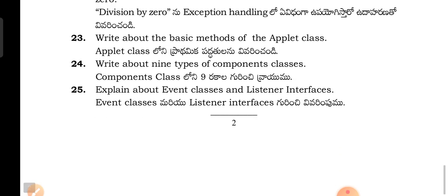So that is the model question paper for computer science second year students, paper 1, Java programming, in Telangana state. Whatever questions I have given, you have to go through those questions and do the hard work. Study the side headings and you will definitely pass. Thanks for watching. Have a nice day. All the best.